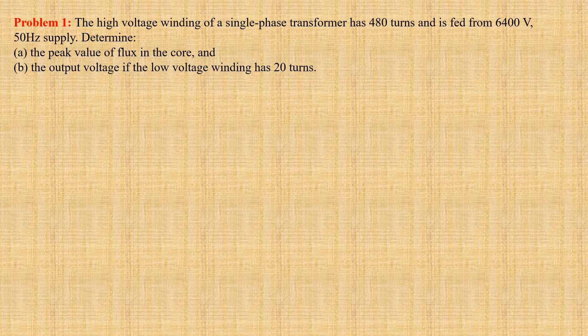Problem number 1. The high voltage winding of a single phase transformer has 480 turns and is fed from a 6400 volt, 50 hertz supply. We have to determine the peak value of flux in the core and the output voltage if the low voltage winding has 20 turns.